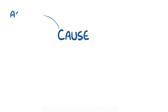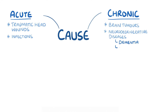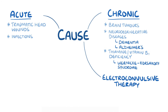Both anterograde and retrograde amnesia can be caused by acute and chronic conditions. Acute causes include traumatic head wounds or infections, and chronic causes include brain tumors and neurodegenerative diseases, including dementia and Alzheimer's. Amnesia can also develop from a thiamine or vitamin B1 deficiency, and in that setting is called Wernicke-Korsakoff syndrome. Amnesia can also result from medical procedures like electroconvulsive therapy, as well as medications like benzodiazepines.